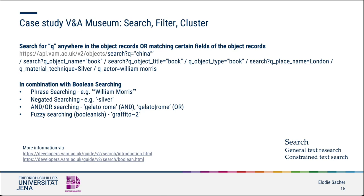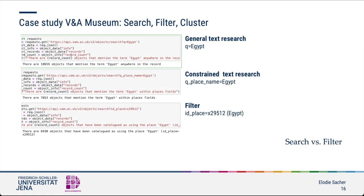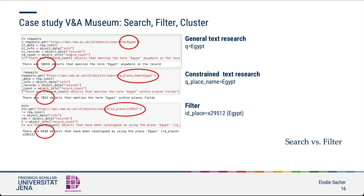However, the returned object records may be insufficient because the same word may be used in multiple meanings. Therefore, using filters instead of keywords in a second step can be the best option to get more precise results. As you can see, the number of returned object records matching Egypt shrinks enormously when you apply the restricted text search and finally the filter ID of Egypt. So in summary, filtering by identifier gives the most accurate results.